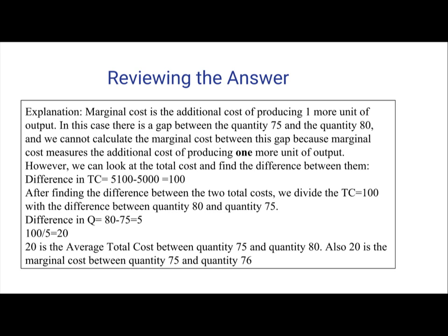That cannot be because marginal cost is the additional cost of producing one more unit of that good, not 5. Not 5 or 3 or 4. However, we can look at the total cost and find the difference between them. Difference in total cost, or TC, is going to be 5,100 minus 5,000, which is equal to 100.